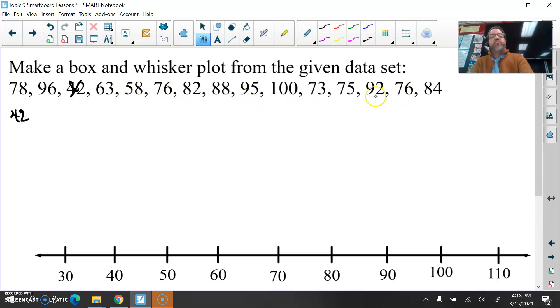Next lowest score, I don't see any more 40s. There is a 58 here. I'll write that directly below the 96. Next would be our 60s. It looks like we have 63. In the 70s, we have 78, 76, 73, 75, 76. So 73, 75, 76, 76, 78. Boy I better write that down fast before I forget what I had. In the 80s we have 82, 88, 84. So 82, 84, 88.